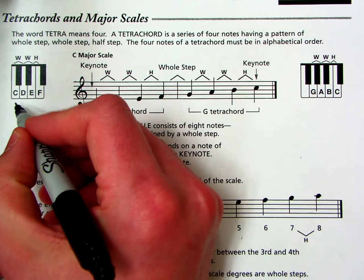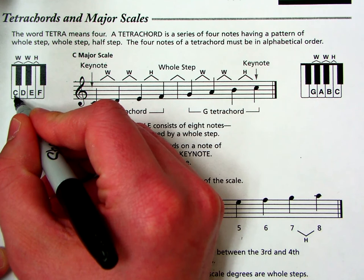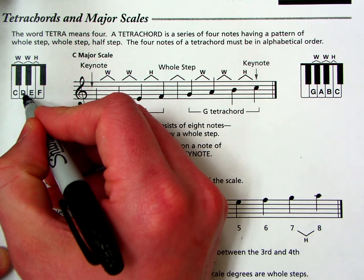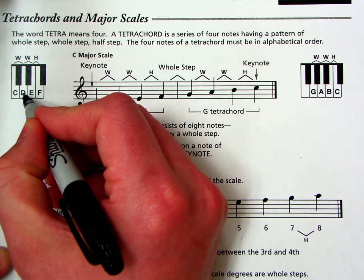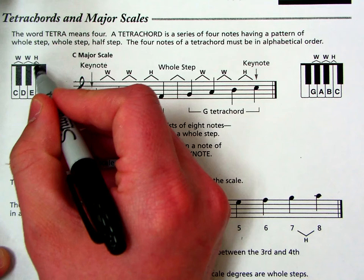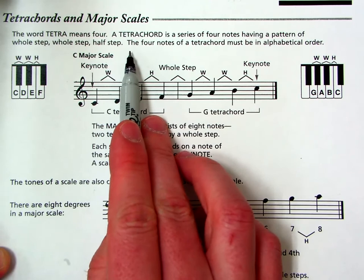Now just as a quick reminder, if you're looking at the keyboard, we know that a whole step is two keys. So we start on C, one, two, so a whole step away from C is D. Again, from D, one, two, a whole step from D is E. And then we need a half step to finish the tetrachord. So E to the next key it touches is F. So C, D, E, F is a tetrachord.